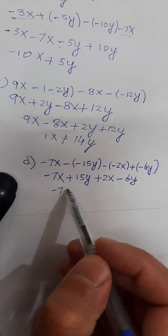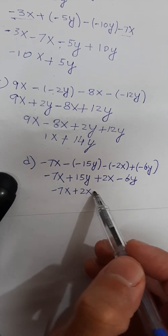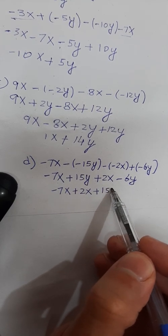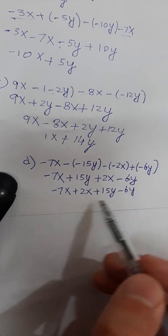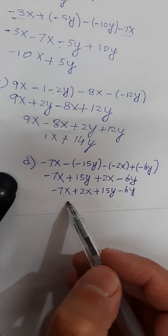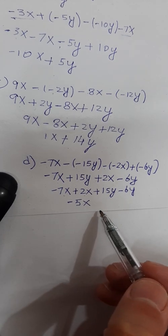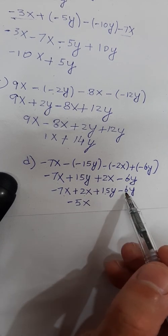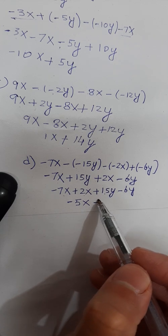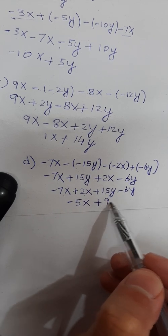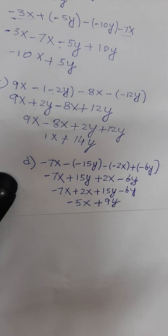Now combine the like terms: minus 7x plus 2x plus 15y minus 6y. Minus 7x plus 2x is minus 5x, and plus 15y minus 6y is plus 9y. This is the solution for part d.